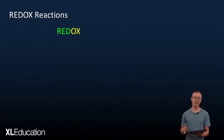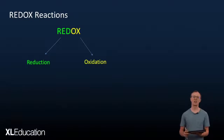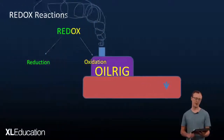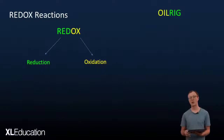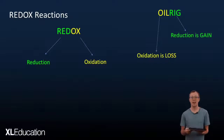The 'red' stands for reduction and the 'ox' stands for oxidation. There's a mnemonic that can help us remember what redox reactions are, and that is OIL RIG. OIL RIG stands for: oxidation is loss and reduction is gain.